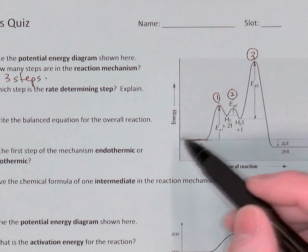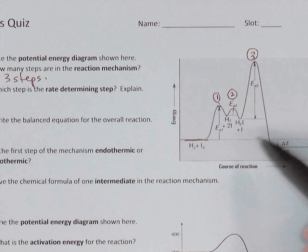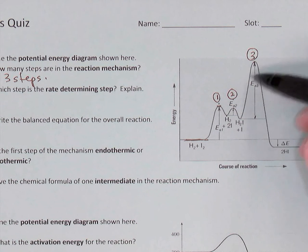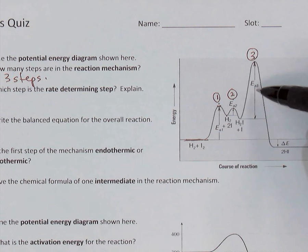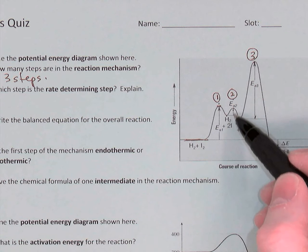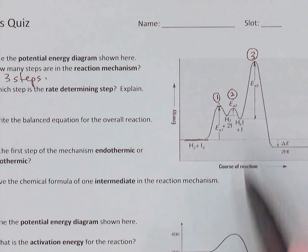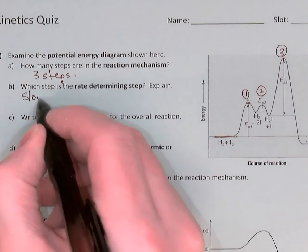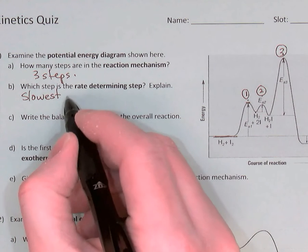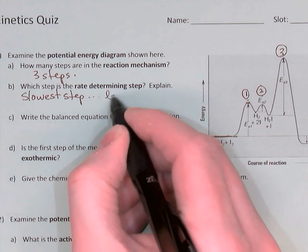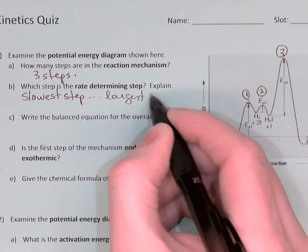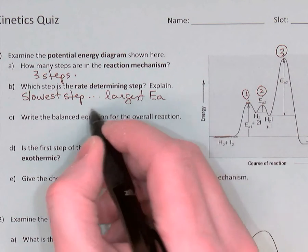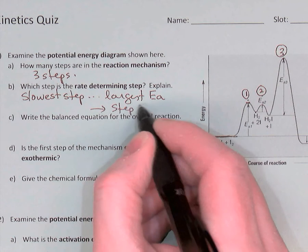We're looking at just the forward reaction. Of those three activation energies, the third one is clearly the largest, so that third step will be the slowest step of the mechanism. The second one was the smallest, so the second step would be the fastest. The rate-determining step is the slowest step of the mechanism — it determines the overall rate of the reaction — so it has the largest activation energy, which is step number three in this diagram.